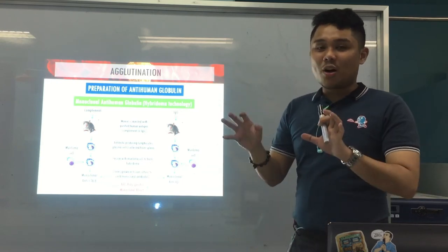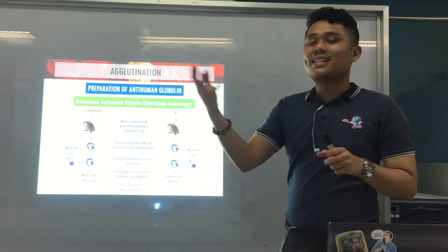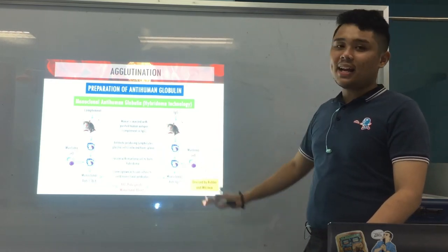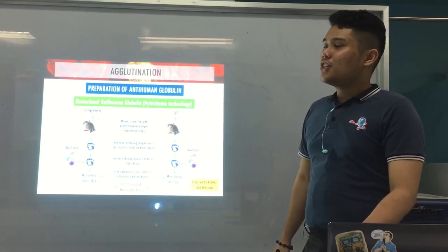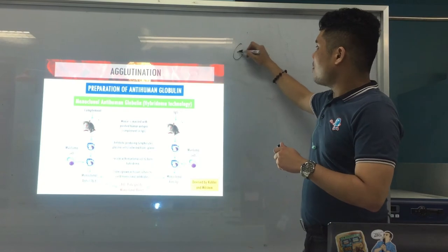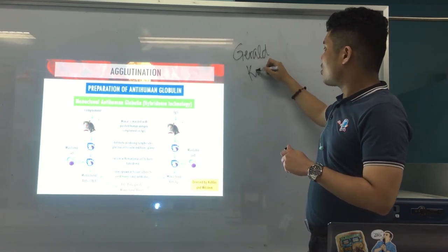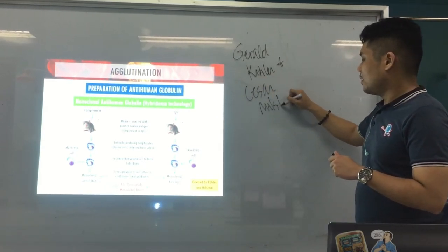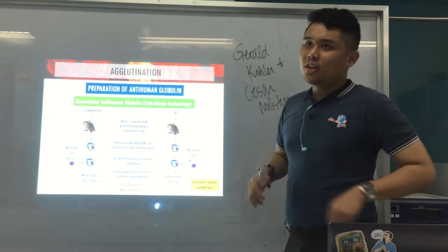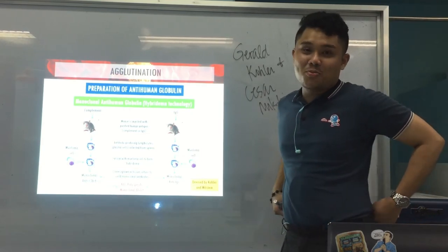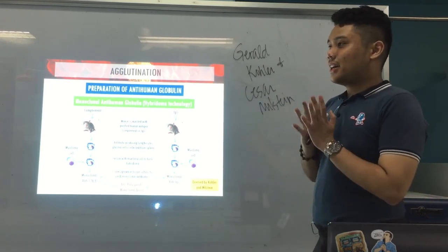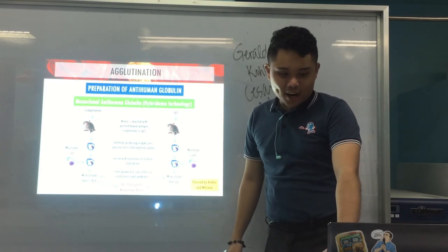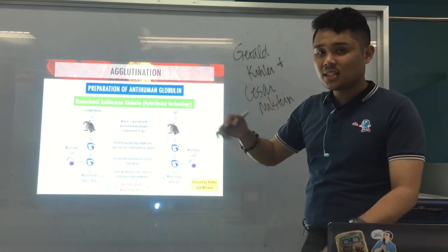It's poly-specific because it can detect either complement and IgG. As for history — who devised the hybridoma technique? Köhler and Milstein. Gerard (or Georges) Köhler and César Milstein developed this technique. And for antibody diversity, that would be Tonegawa.